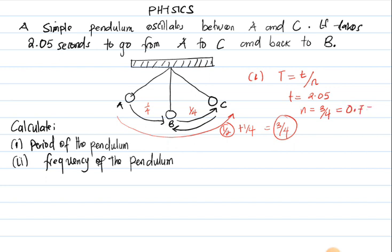Is making sense. Now we can move and find our period. So our period is time taken 2.05 divided by number of complete oscillations 0.75, which will eventually punch on the calculator, gives you 2.73 seconds. That's your period.